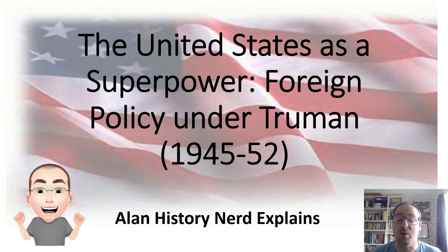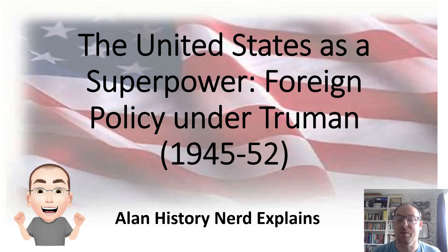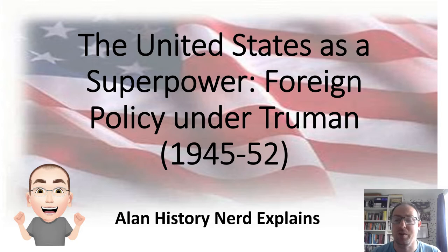Hello and welcome to Alan History Note. In this video I'm going to be looking at foreign policy under Truman, from 1945 through to 1952. This is the period following the end of World War II in which the US starts to really establish itself as a dominant world superpower. We're going to look at the Truman Doctrine, the Marshall Plan, events in Europe including the Berlin Blockade and airlift, containment, and issues in Asia leading to the Korean War.